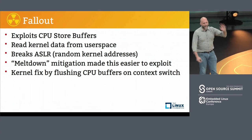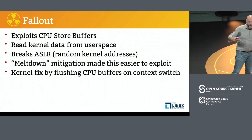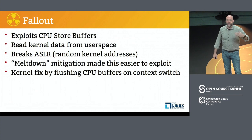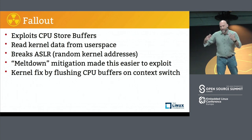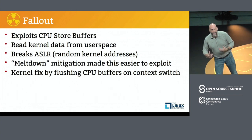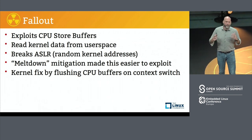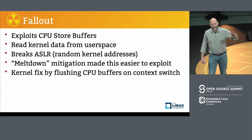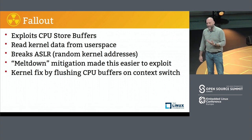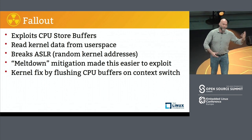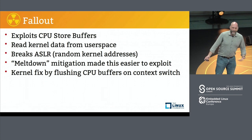Fallout — another cool logo, came out at the same time. These involve store buffers inside CPUs — how CPUs write things before passing them on. This one's more dangerous in that you can read kernel data from user space. It doesn't cross the VM boundary, but you have secrets inside the kernel — keys and other things — you can now read. It totally broke kernel address space randomization, and actually the Meltdown mitigation made this easier to exploit. We try to fix one thing and make something else easier. Again, we fix this by flushing buffers.